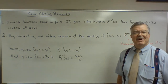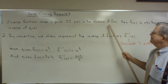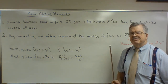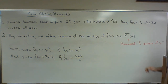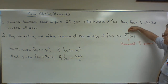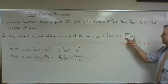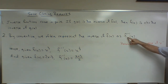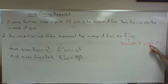Let's have some closing remarks on the topic of inverse functions. Inverse functions come in pairs. If g of x is the inverse of f of x, then f of x is also the inverse of g of x. Now here's something I haven't mentioned yet. By convention, we often represent the inverse of f of x as f superscript negative one evaluated at x. When we see this symbol, we say 'f inverse of x' or 'f inverse evaluated at x.'